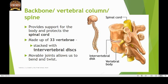The backbone, vertebral column or spine is attached to the skull and is a long bony structure which provides support for the body and protects the spinal cord. The spinal cord is an important part of the nervous system. The backbone is made up of 33 irregularly shaped ring-like bones called vertebrae. The vertebrae are stacked on each other with the support of inter-vertebral discs in between them. This structure gives us the flexibility to bend, stretch or twist with ease.